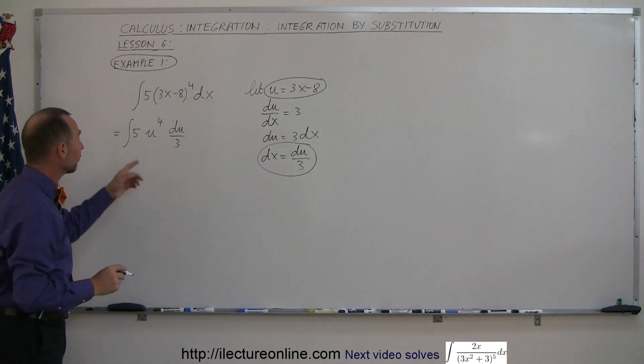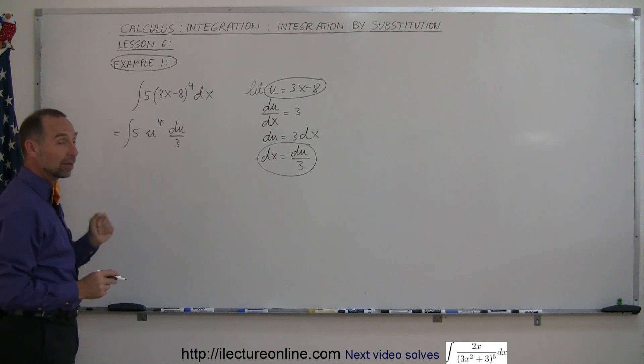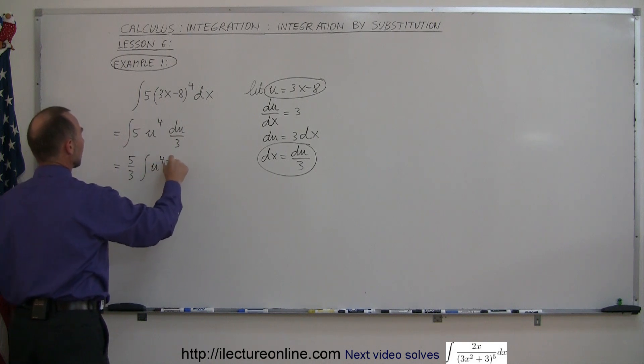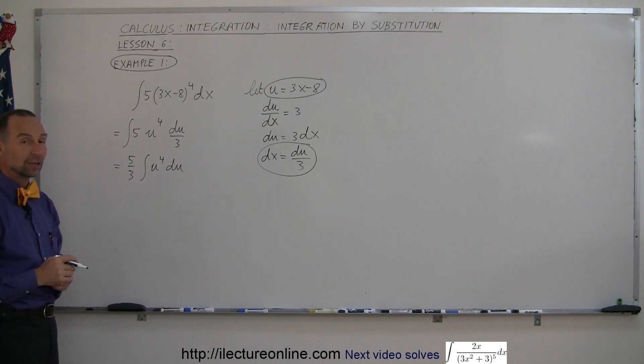Then the next step, we're going to take the 5, take it outside the integral sign, and divide by 3, take it outside the integral sign. So this can now be written as 5 over 3 times the integral of u to the fourth du. Now you can see that this is a nice, simple, easy format that you know how to integrate.